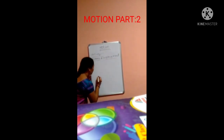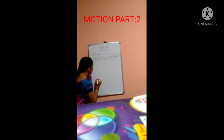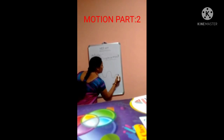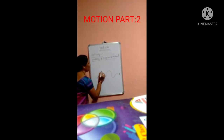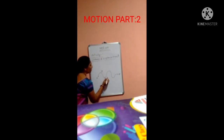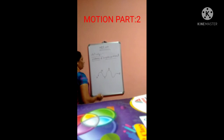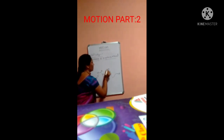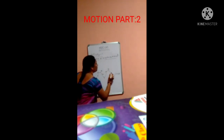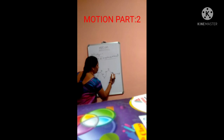An object travels from point A to point E. Between these points there are point B, point C, and point D. Here AB is equal to 4 meters, BC is equal to 5 meters, CD is equal to 7 meters, and DE is equal to 12 meters.